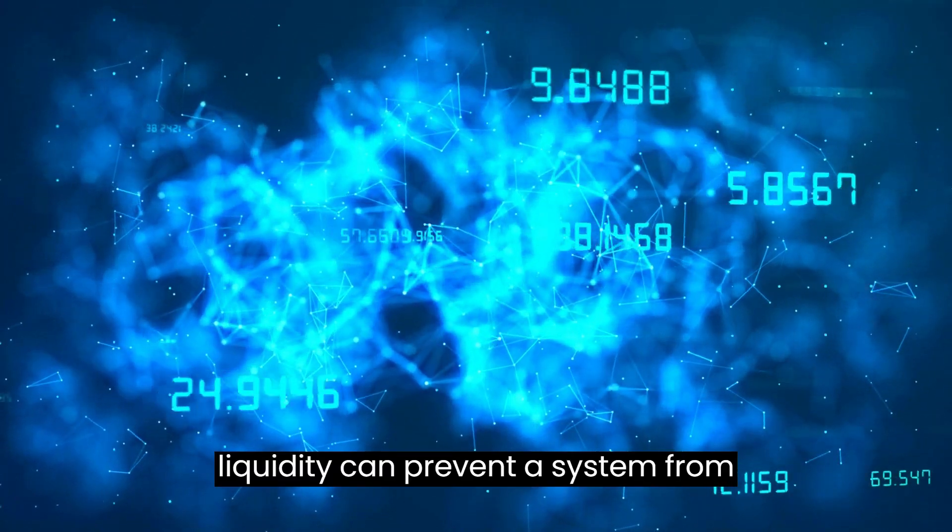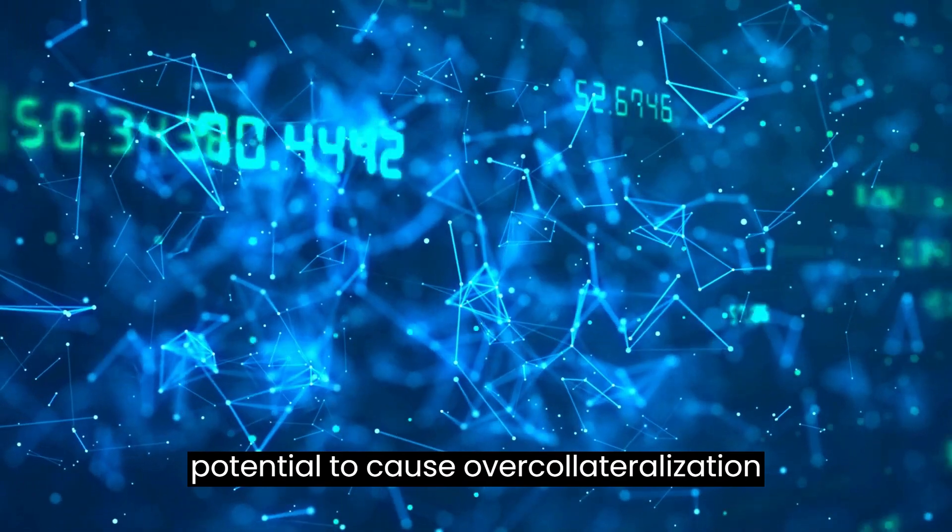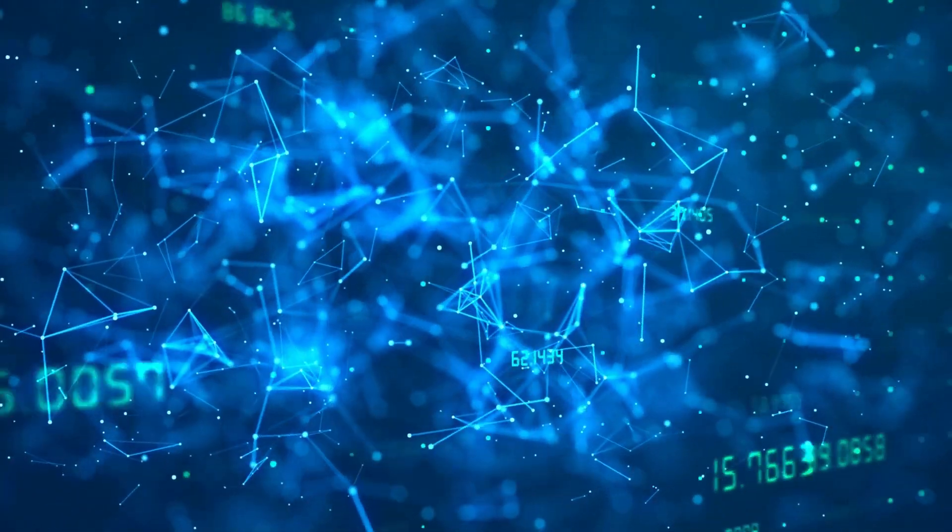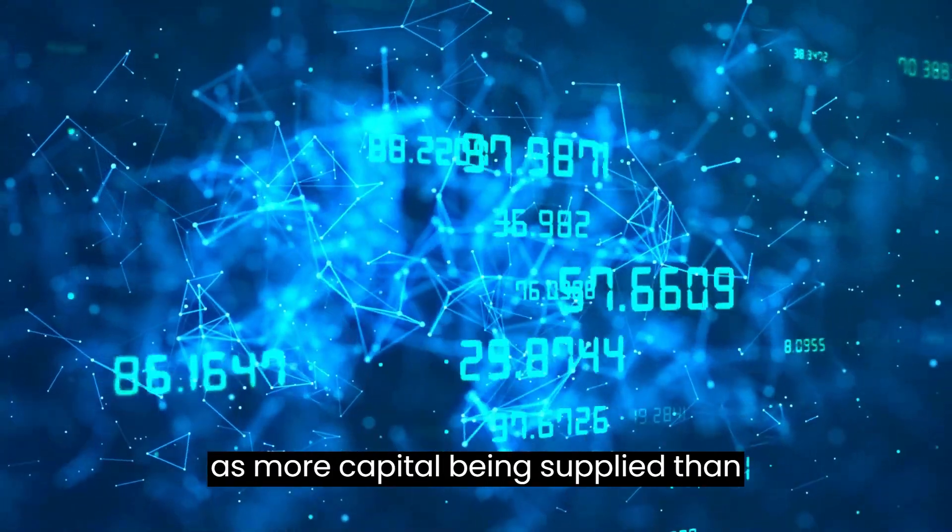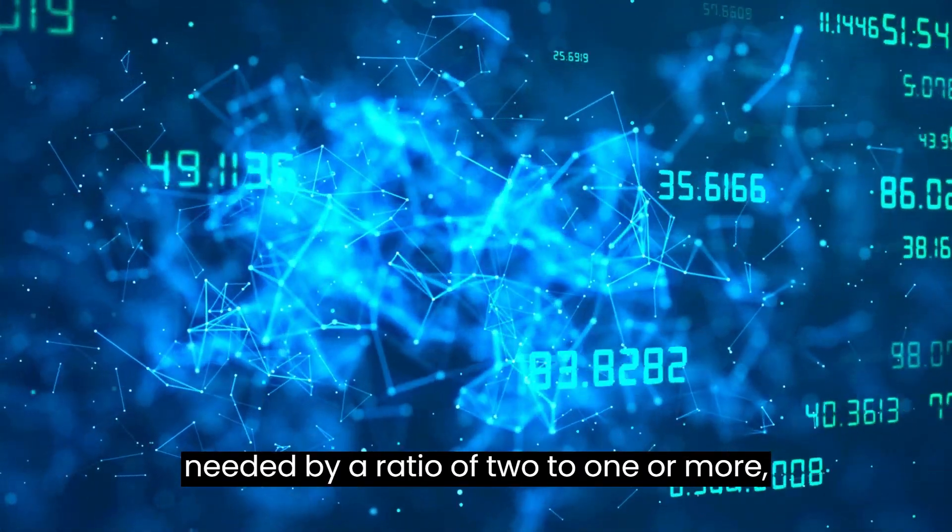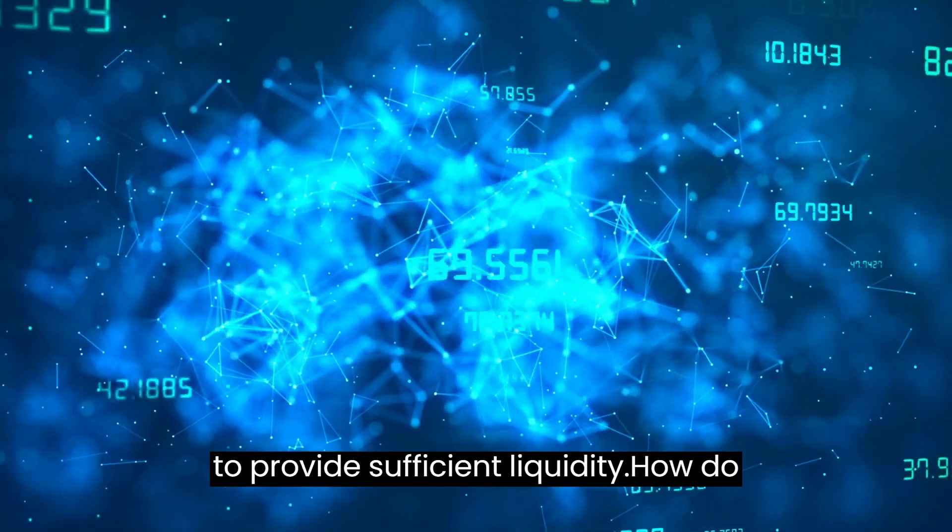Phantom liquidity can prevent a system from functioning properly, as it has the potential to cause overcollateralization of liquidity pools. Overcollateralization, which is defined as more capital being supplied than needed by a ratio of 2 to 1 or more, happens when too much money is collected to provide sufficient liquidity.